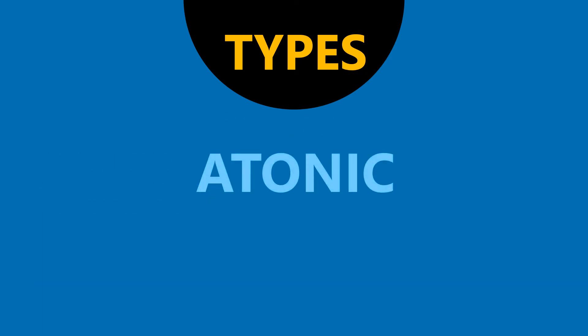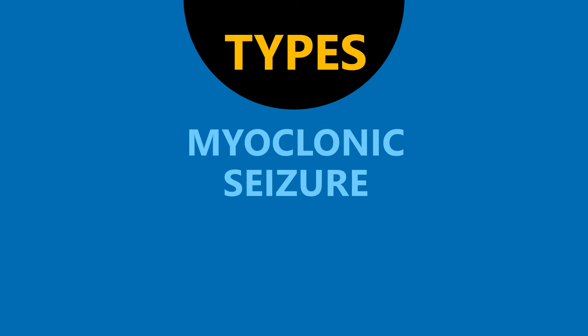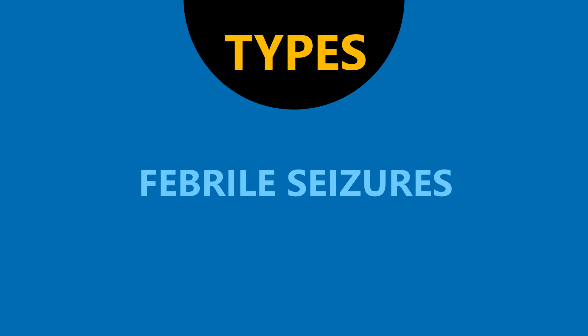An atonic seizure is called a drop attack — this is when a person will suddenly drop to the floor in a very brief seizure, with obvious risks of injury. A myoclonic seizure is usually an isolated seizure with short-lasting jerks of the body; sometimes these jerks can just feel like a small twitch. A febrile seizure, usually known as febrile convulsion, is typically triggered by a child or baby being too warm or linked to childhood illnesses which raise the child's temperature.